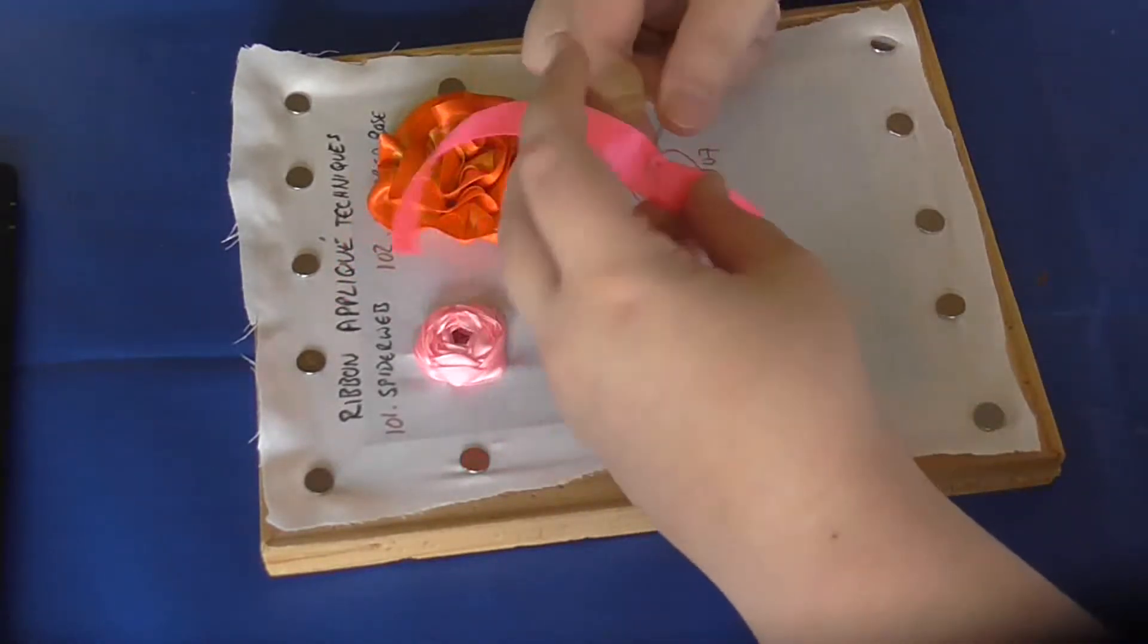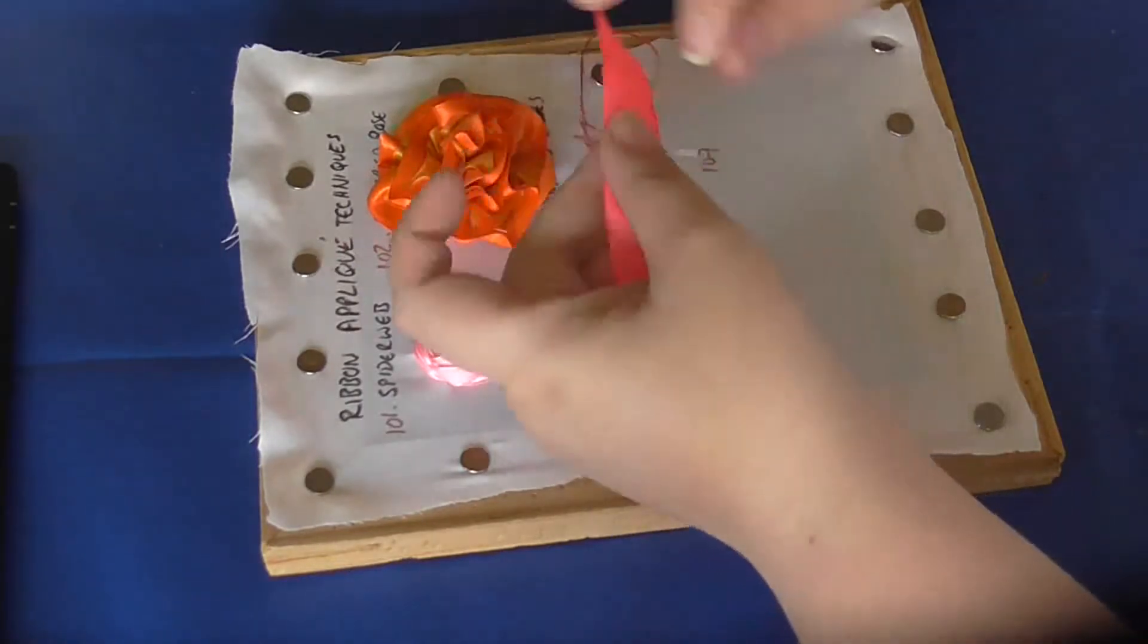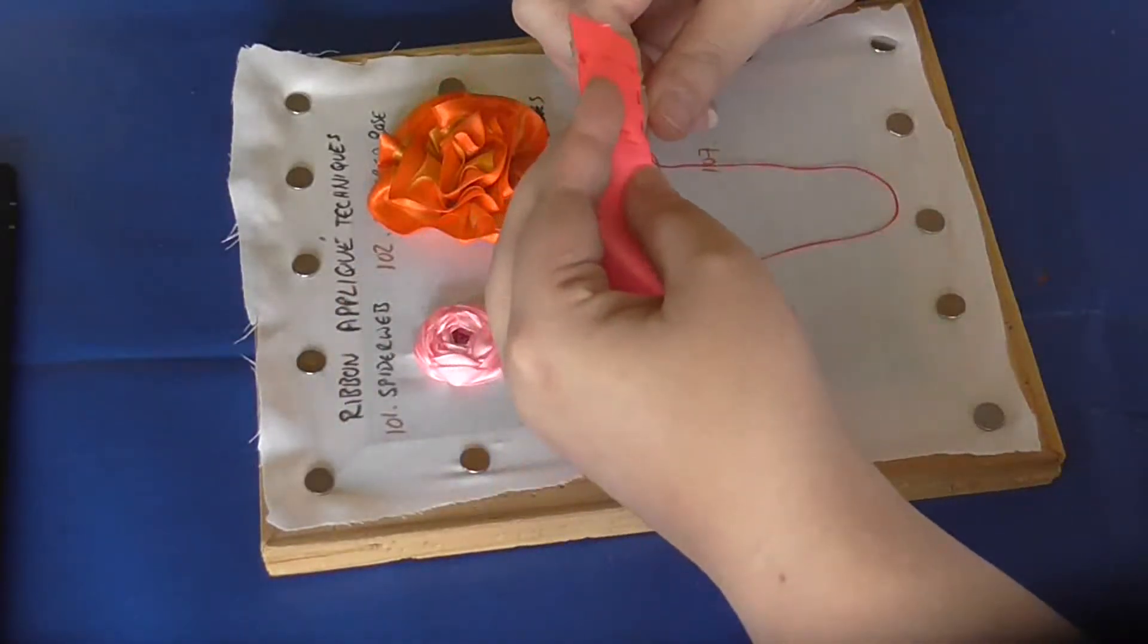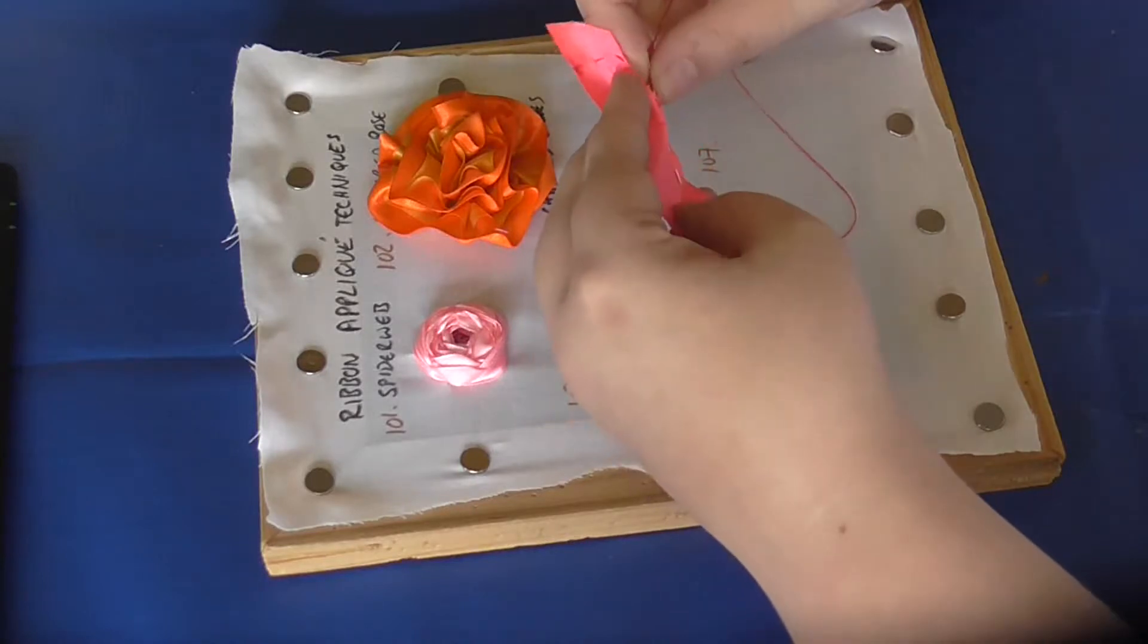You're making this kind of stitch pattern all the way down for each of your marked petals. As I said, you can do more than five, but you would need to do something for the middle as well.